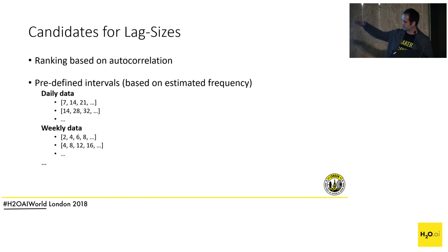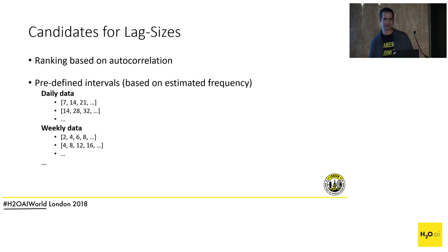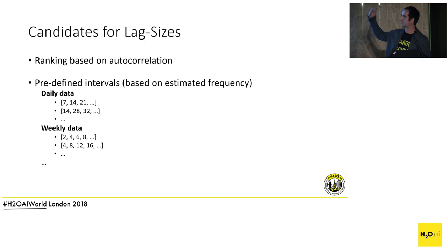We have frequency tables set for many different frequencies. If you have a very uncommon frequency, it will fall back to all possible lag sizes and the genetic algorithm figures out what are good lag sizes. We can still apply autocorrelation — there are several strategies that can be combined — and the genetic algorithm determines what's useful.